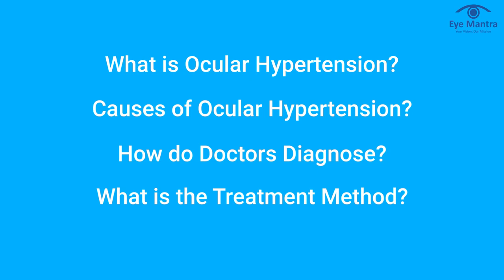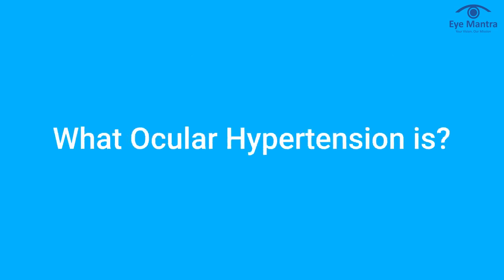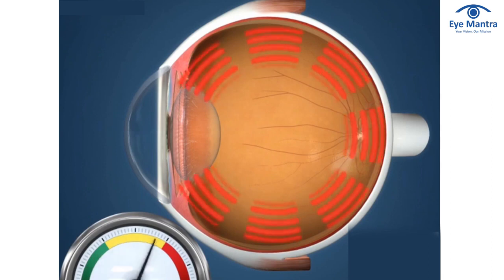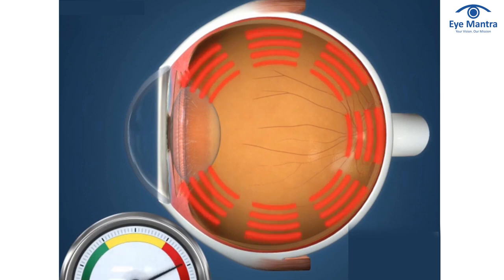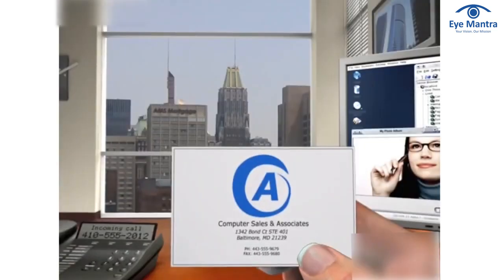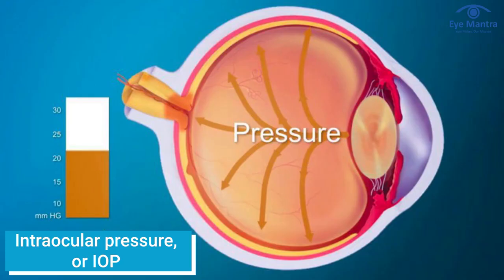Let us begin with what ocular hypertension is. The pressure in your eyes being higher than normal is known as ocular hypertension. High eye pressure, if left unchecked, can lead to glaucoma and irreversible visual loss. Intraocular pressure, or IOP, is the medical name for the pressure within the eyes.